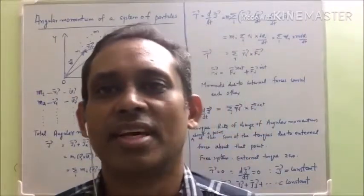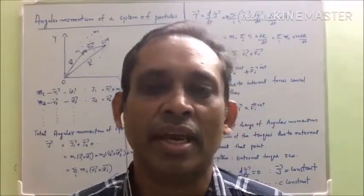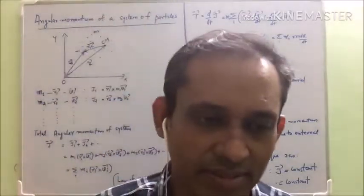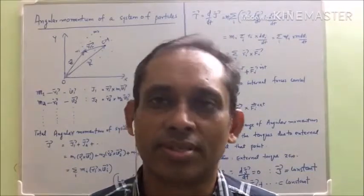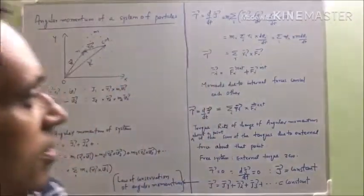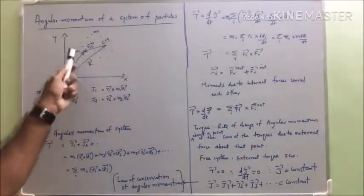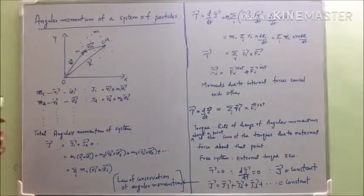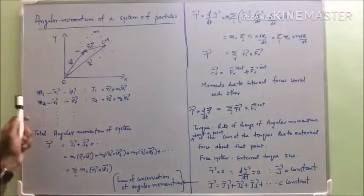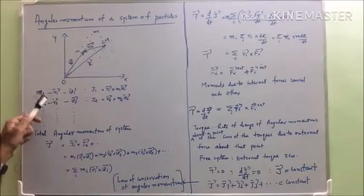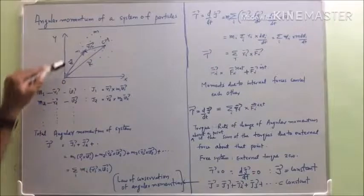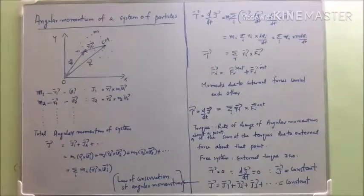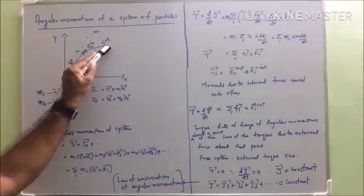Welcome. Let us discuss the angular momentum of a system of particles. Suppose we have a system of particles with masses m1, m2, m3, etc. Their position vectors are r1, r2, r3, etc., with respect to point O. This is the center of mass of the system.